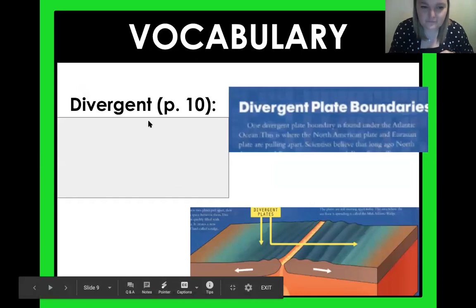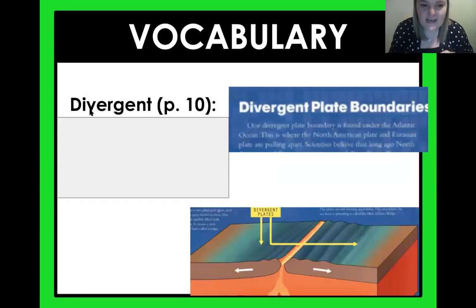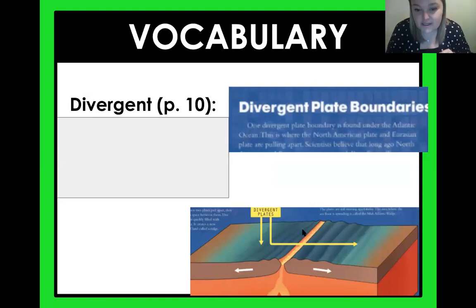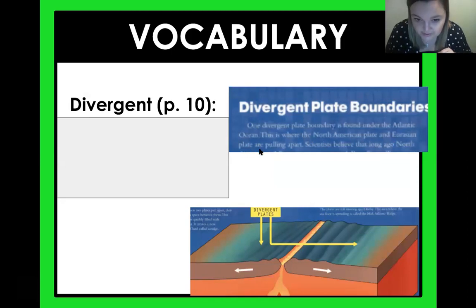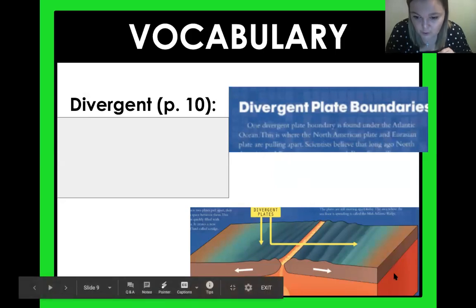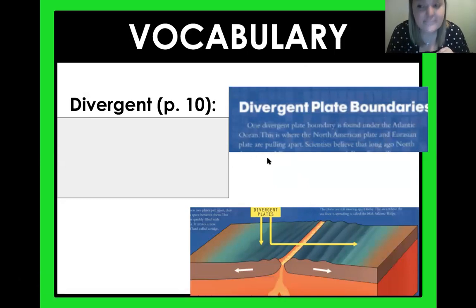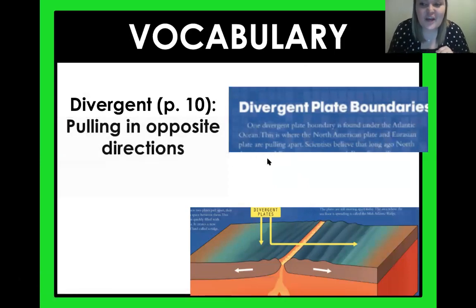Now, what about this word? Divergent. We're going to read about divergent plate boundaries today, but there's a picture here that kind of gives it away. It says one divergent plate boundary is found under the Atlantic Ocean. This is where the North American plate and the Eurasian plate are pulling apart. So what do you think 'divergent' means? Good job — it means you're pulling in opposite directions.